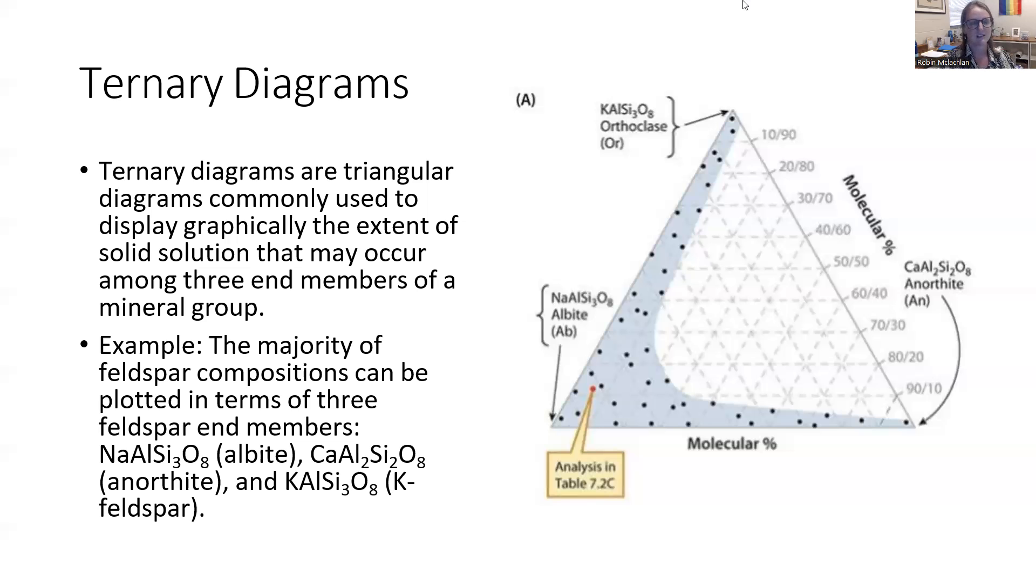For example, as you can see in this image, we can look at the different feldspars, feldspar compositions. And there's different end members. Albite, for example, 100% albite is all the way in the lower left. 100% anorthite is in the lower right. And 100% orthoclase is in the top.